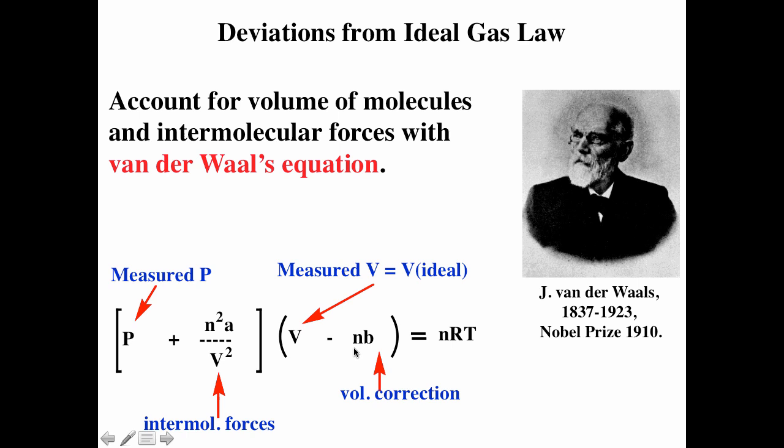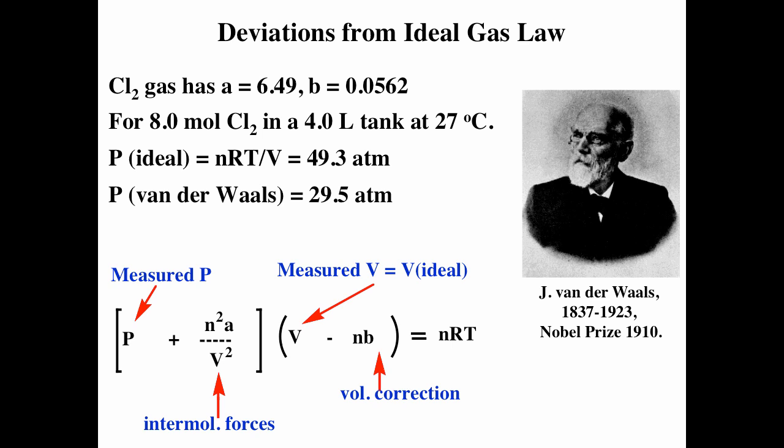n is the number of moles, V is the volume, and there is an A parameter and a B parameter. Each gas has its own A parameter and its own B parameter. Van der Waals' looks a lot like PV equals nRT, but with correction terms for intermolecular forces and for the volume of the gas particles themselves.